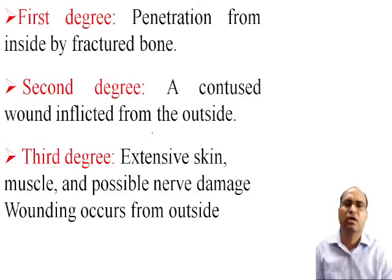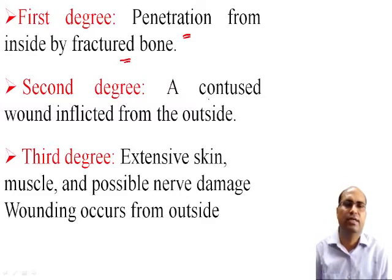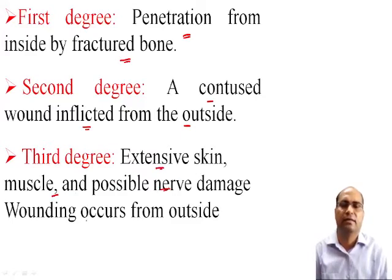Open or compound fractures are further classified into three categories: first degree, in which there is penetration from the inside by the fractured bone; second degree compound fractures, in which a contused wound is inflicted from the outside; and third degree compound fractures, in which there is extensive skin and muscle damage and the wound occurs from the outside.